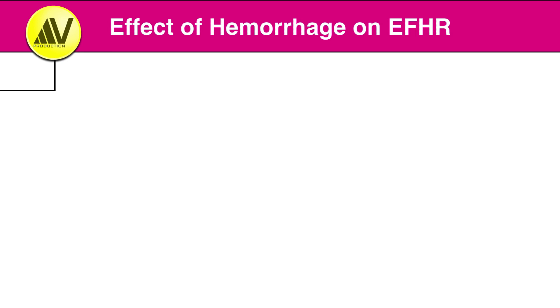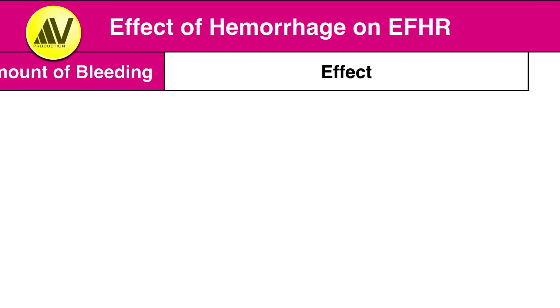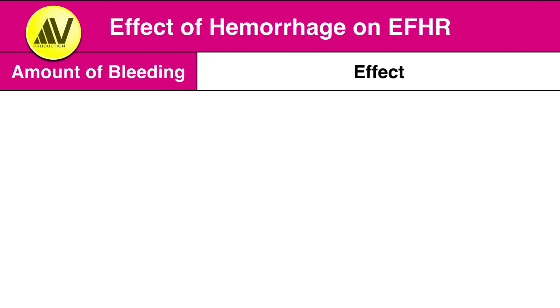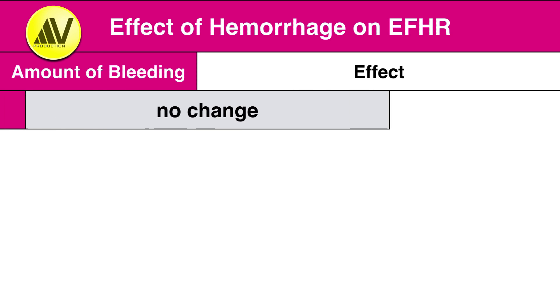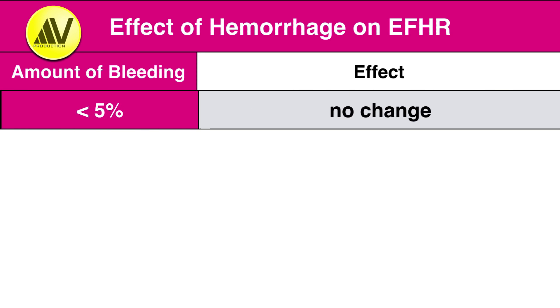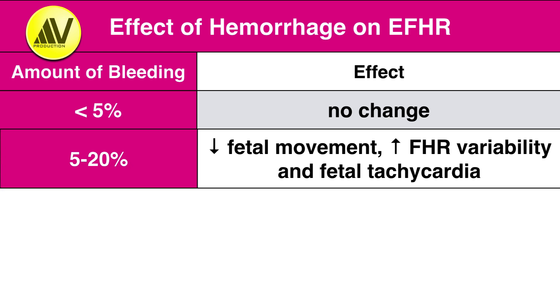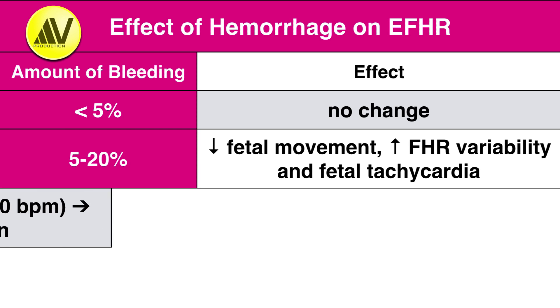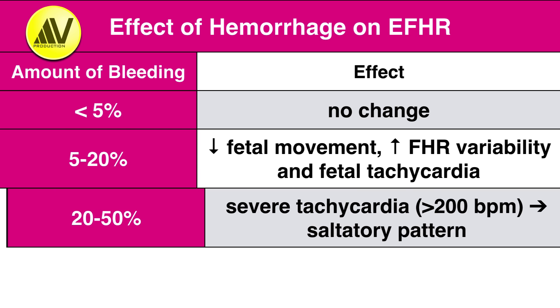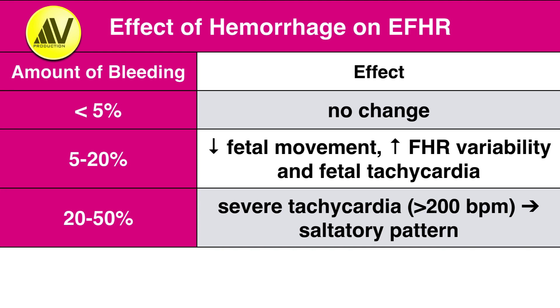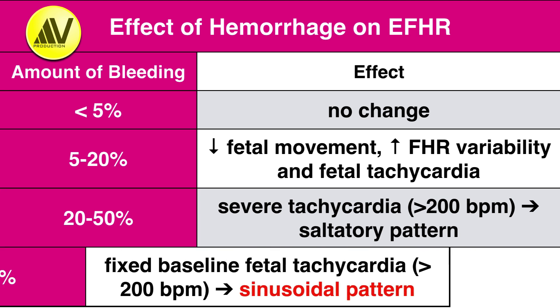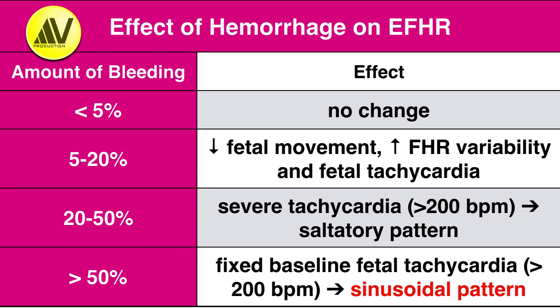Since the commonest cause of sinusoidal pattern is severe fetal anemia, I am going to discuss it in more detail. Remember, if fetal bleeding is less than 5%, there is no change in electronic fetal heart rate tracing because of compensatory mechanisms going into action. If fetal hemorrhage is 5-20%, there is diminished fetal movement, increased fetal heart rate variability and fetal tachycardia owing to hypovolemia, inducing stimulation of fetal baroreceptors and stretch receptors in the atrium.